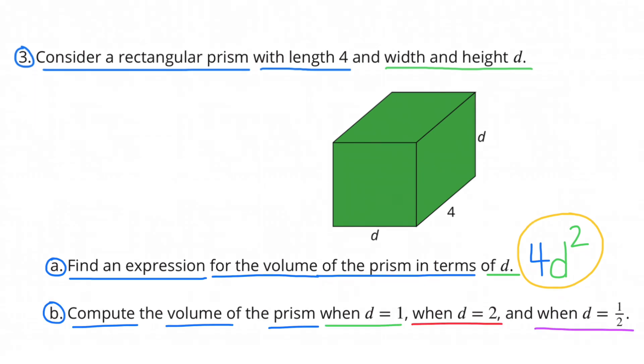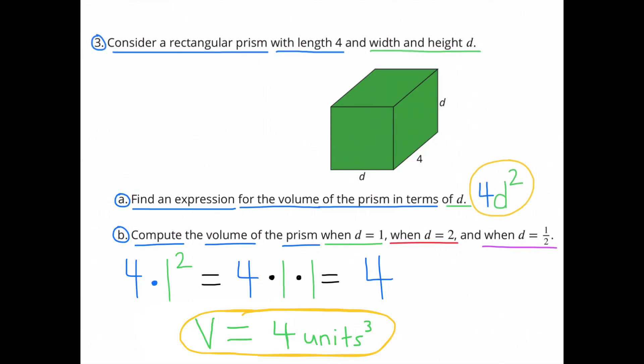B. Compute the volume of the prism when d equals 1, when d equals 2, and when d equals 1 half. When d equals 1, it would be 4 times 1 to the power of 2, or 4 times 1 times 1, which is 4. So the volume would be 4 units cubed.